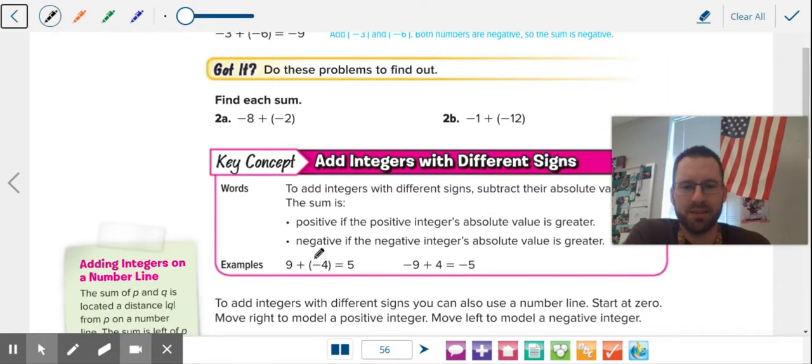Now, if they have different signs, so here we have a positive and a negative or a negative and positive, you're actually going to be finding the difference. They're pulling in different directions. So when you put two opposing forces together, they counteract each other. It's kind of a battle. It's like a tug of war.